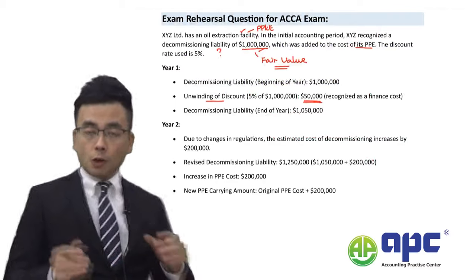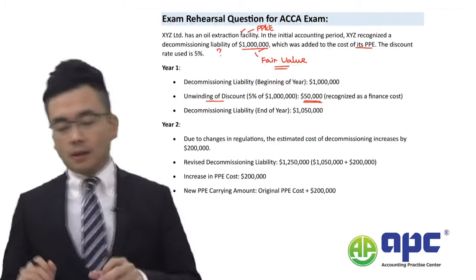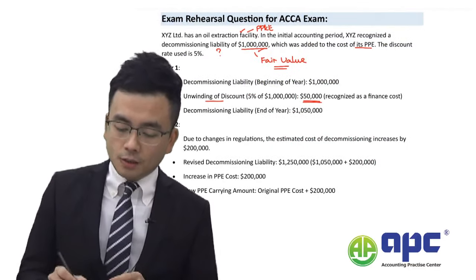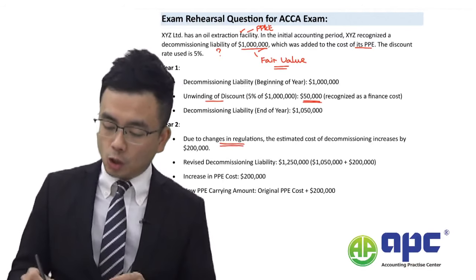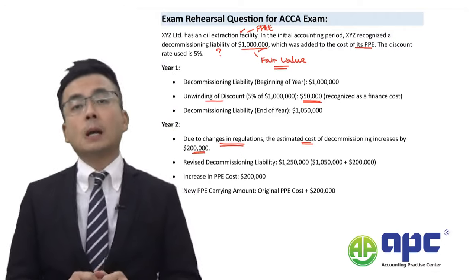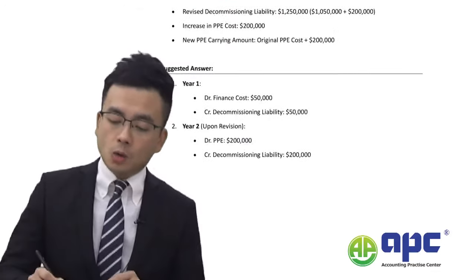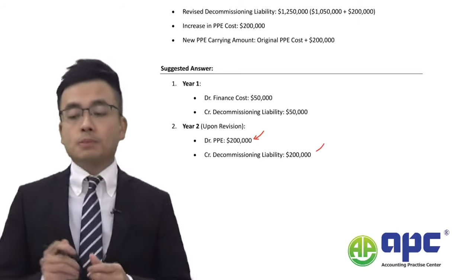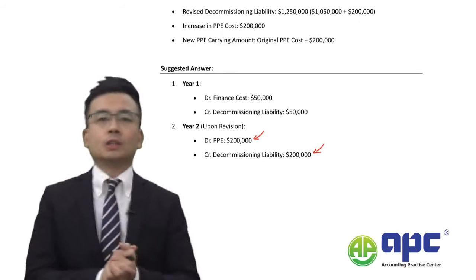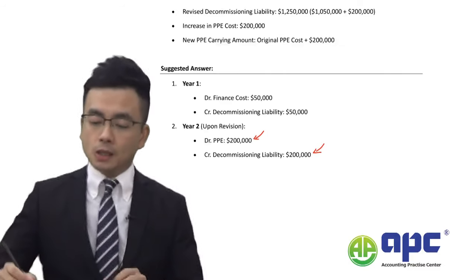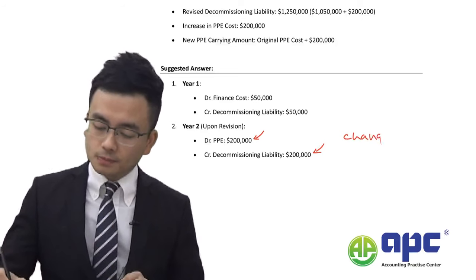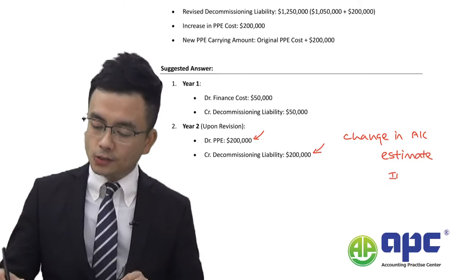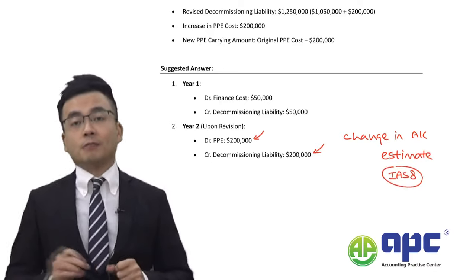In the example scenario, the information changes further: in year two, due to changes in regulations, we estimate the cost of decommissioning would increase by $200,000. In that case, I will need to add that $200,000 increase into PP&E again and into the provision liability again. This is a change in accounting estimate according to IAS 8, using the prospective adjustment method.